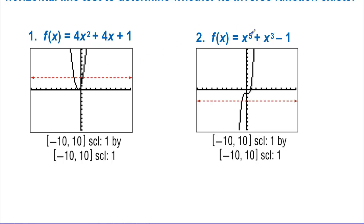Number two, we have X to the fifth. These act like X cubed. Now if it dipped down and went back up, it would fail the horizontal line test. But as it sits, it passes the horizontal line test, so its inverse will be a function. It is one-to-one.